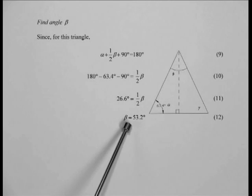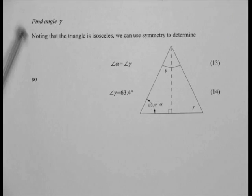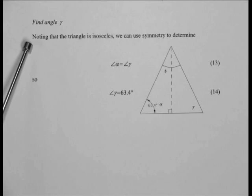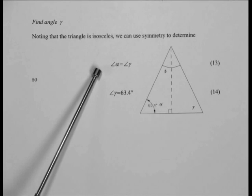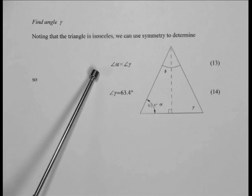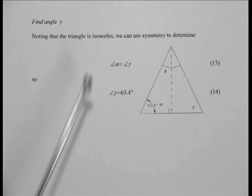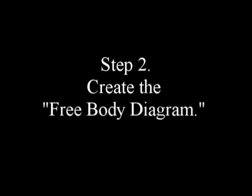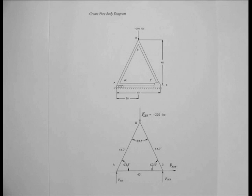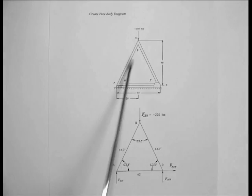Thus beta is equal to 53.2 degrees. To find the angle gamma, we note that the triangle is isosceles. We can use symmetry to determine that the angle alpha is equal to the angle gamma, thus the angle gamma is equal to 63.4 degrees. We have now completely dimensioned and determined the angles for our truss.